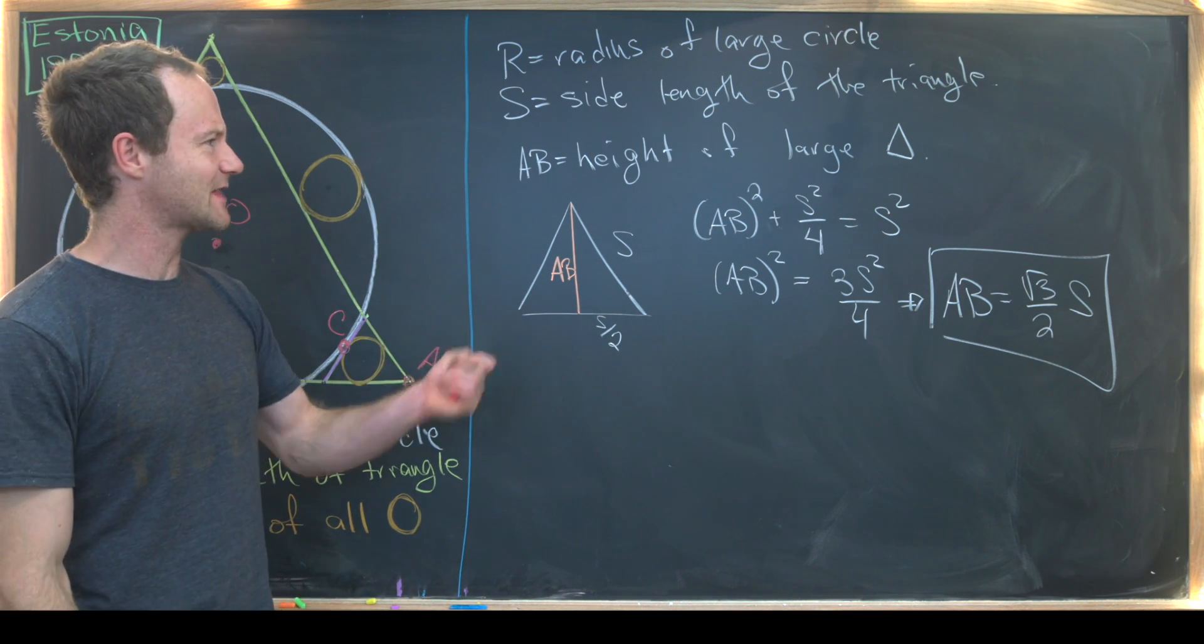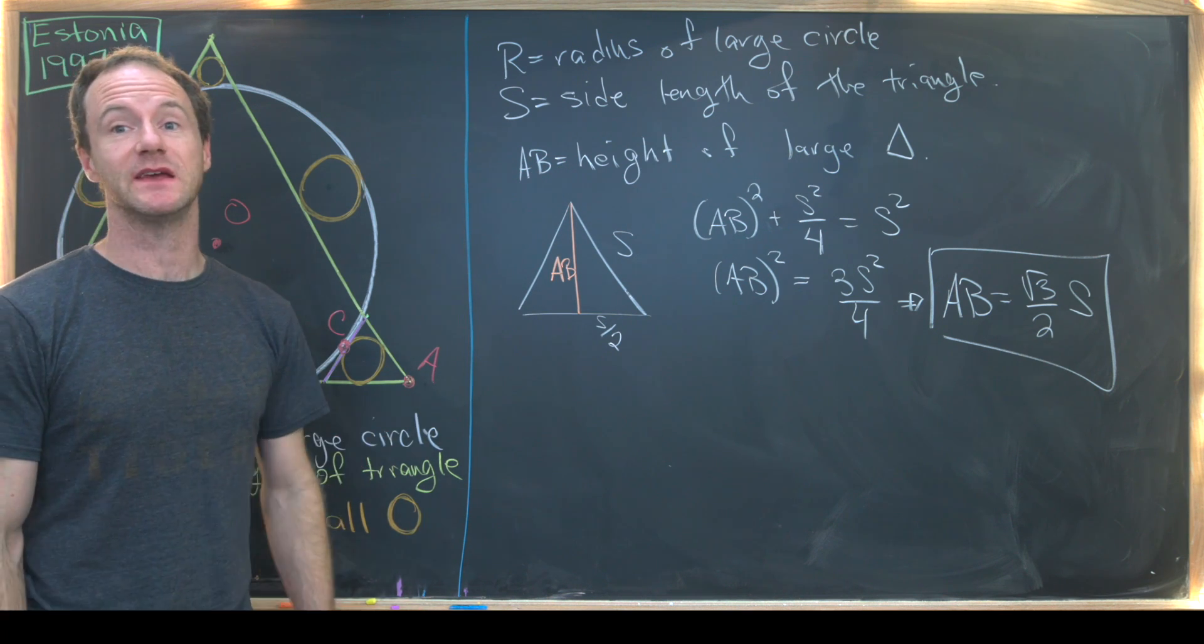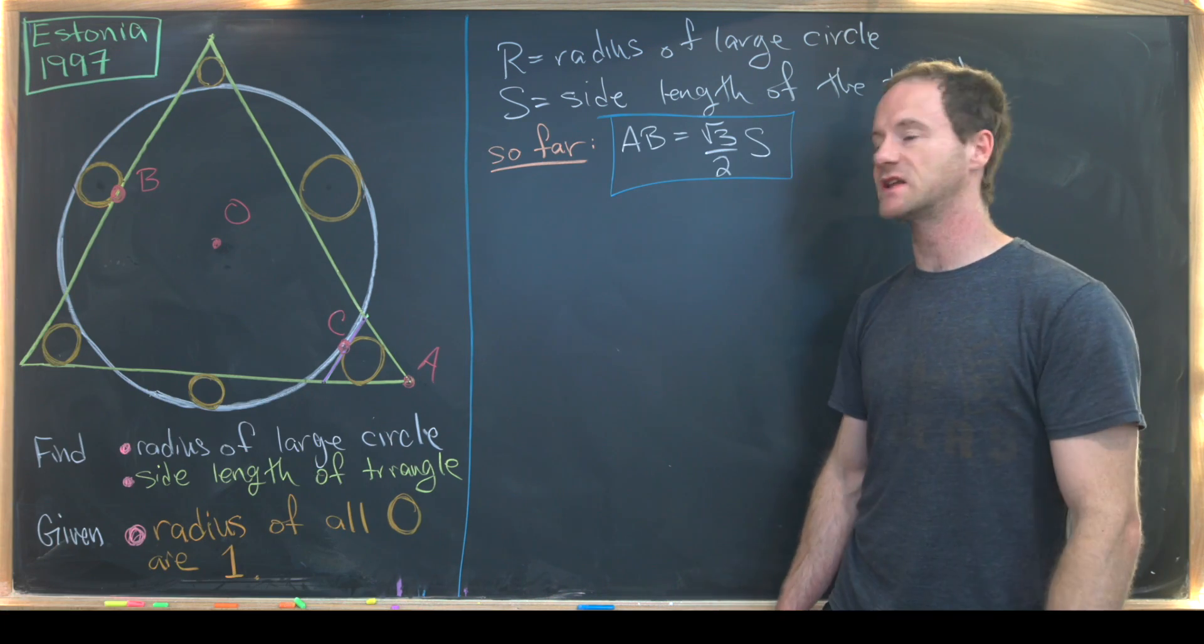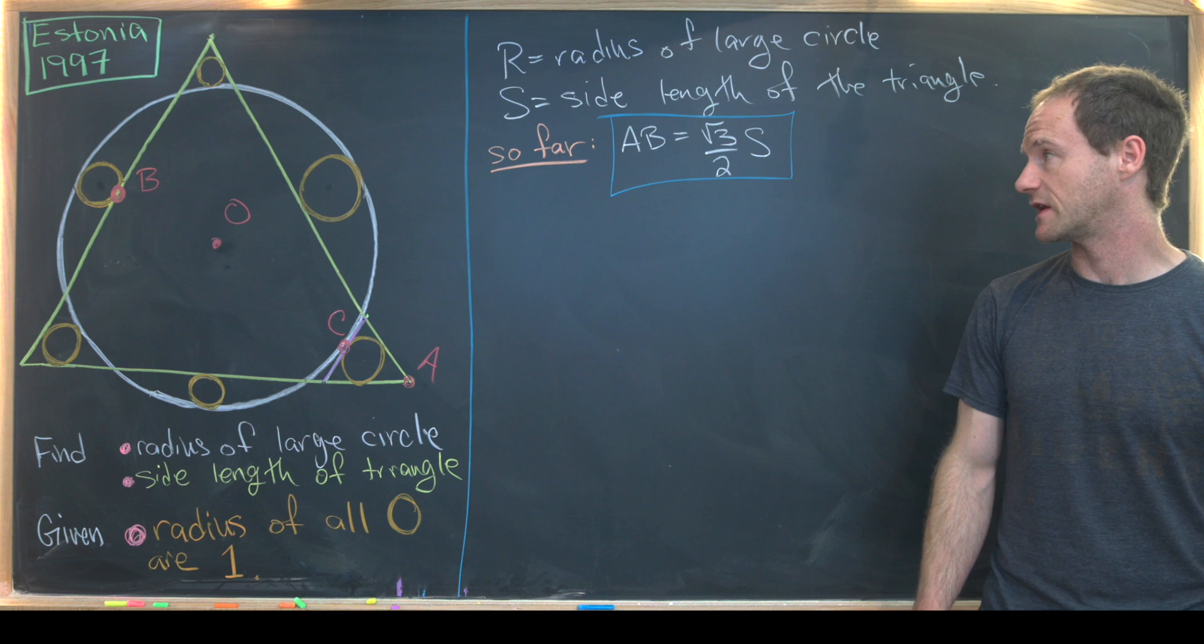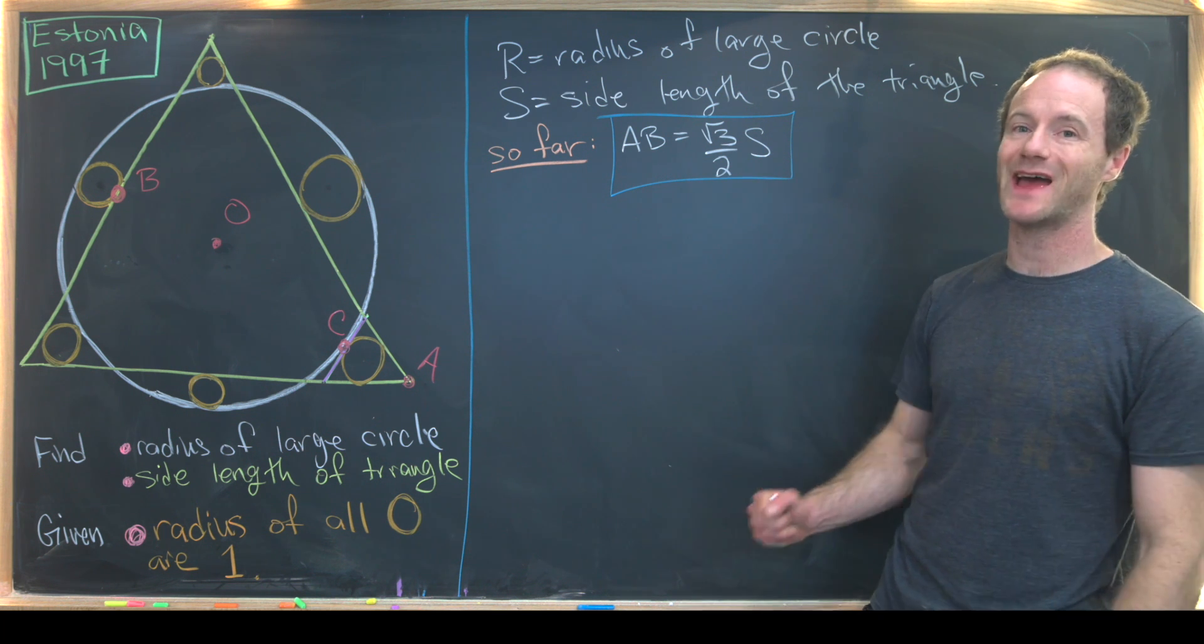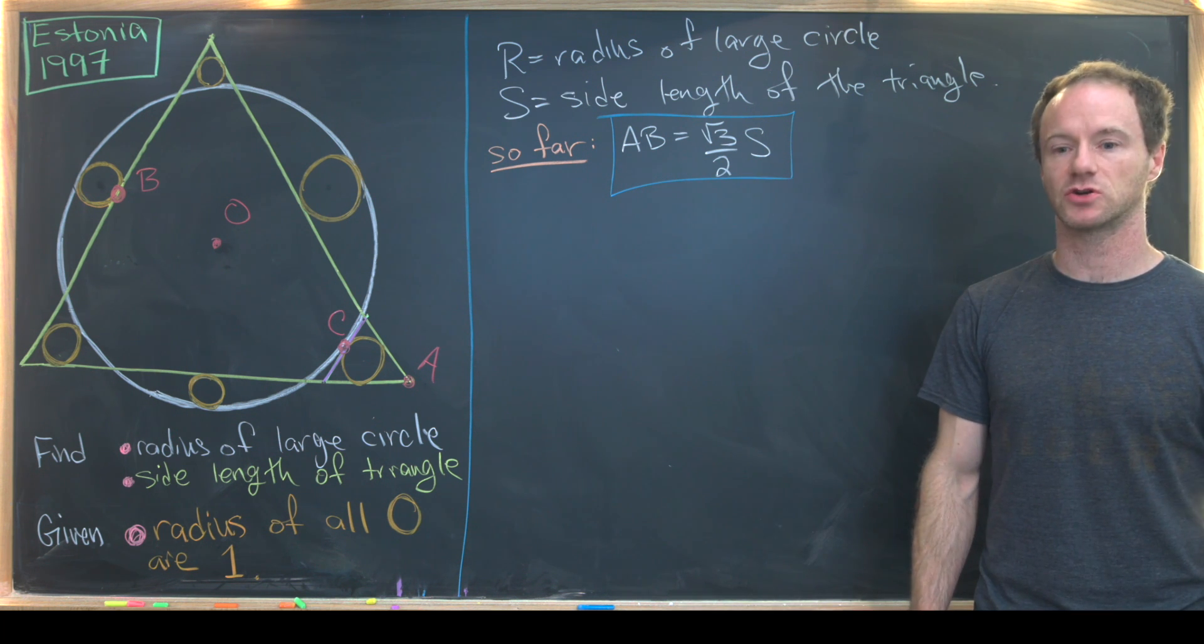So let's maybe take that information up here and then we'll measure AB a different way. So we just got done with our first calculation of length AB. We found that it was root three over two S, where that was the side length of the large triangle.